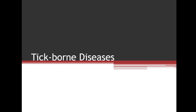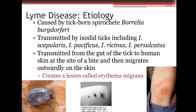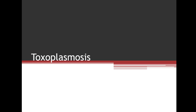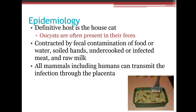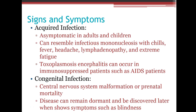Toxoplasmosis is caused by the parasite Toxoplasma gondii. It's associated with house cats — pregnant women must avoid cat litter boxes because oocysts are found in cat feces. It can also be contracted through fecal contamination, food, soil, soiled hands, undercooked or infected meat, and raw milk. All mammals, including humans, can transmit it through the placenta, potentially causing congenital infections. Symptoms resemble mono — chills, fever, headache, lymphadenopathy, and extreme fatigue — and immunocompromised patients, especially AIDS patients, are more susceptible.